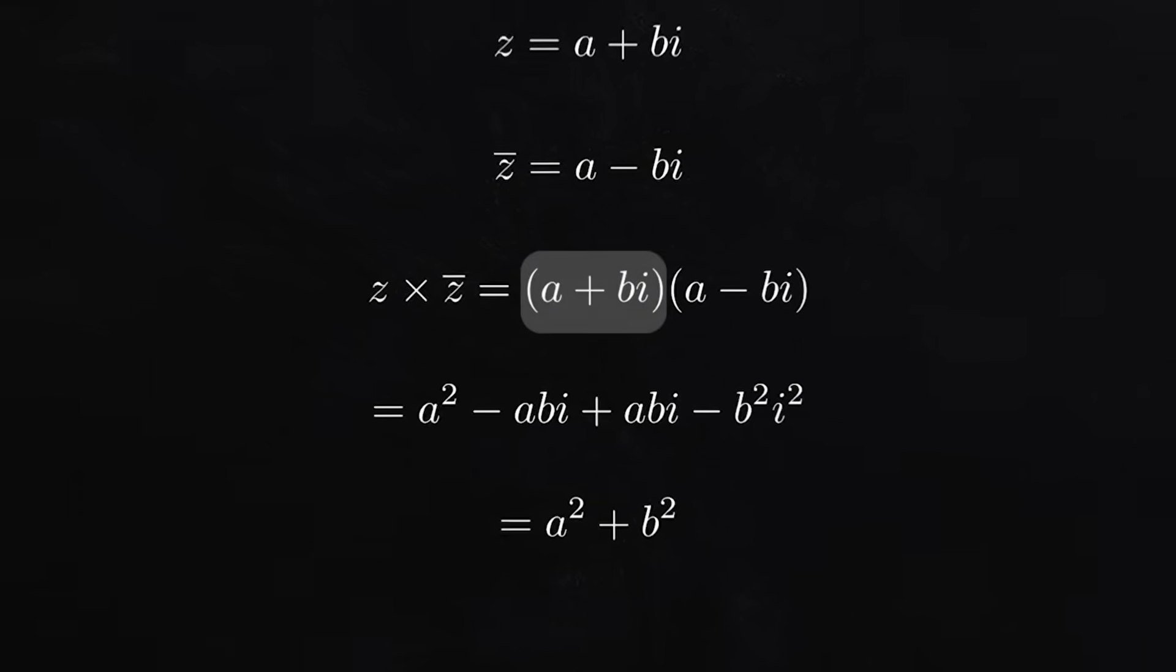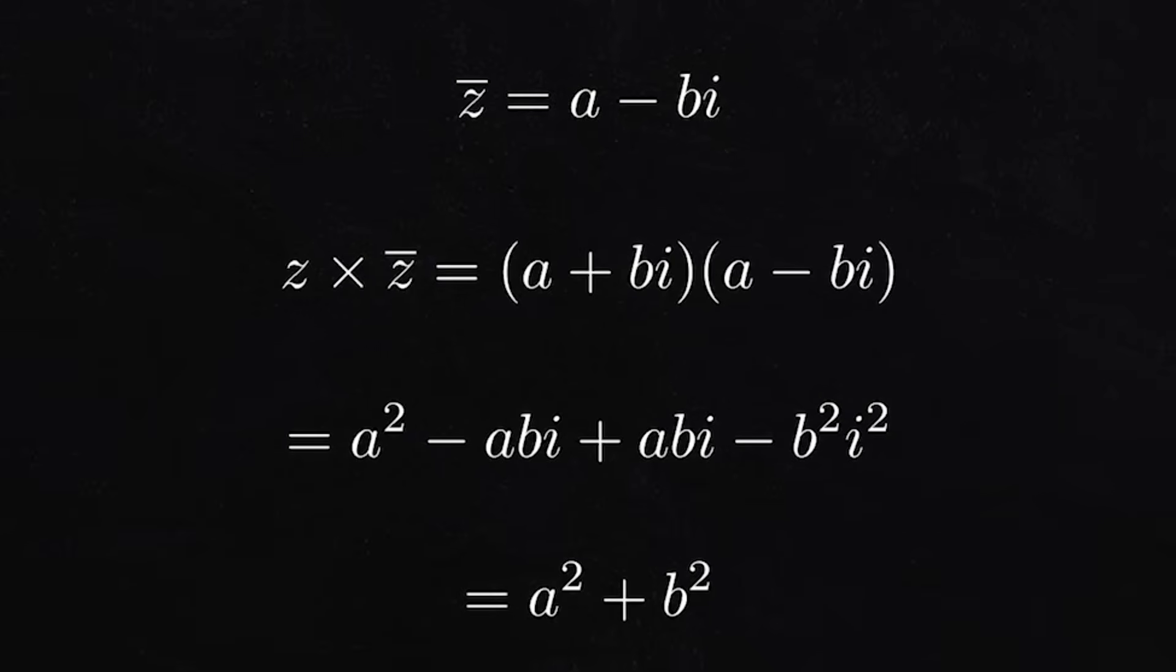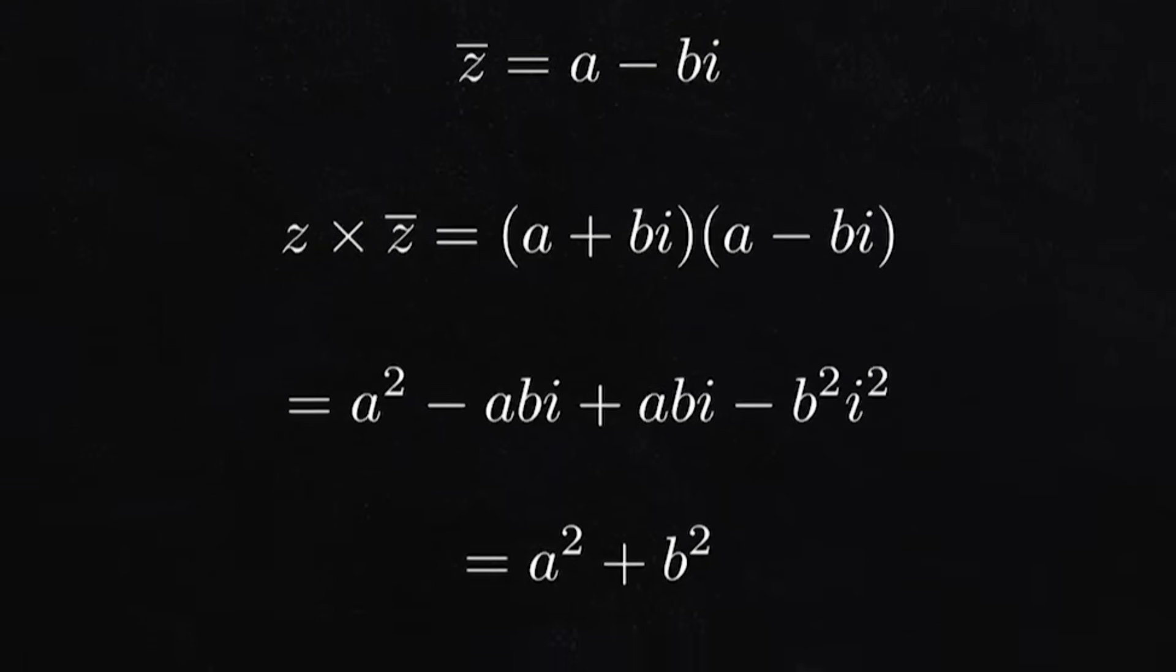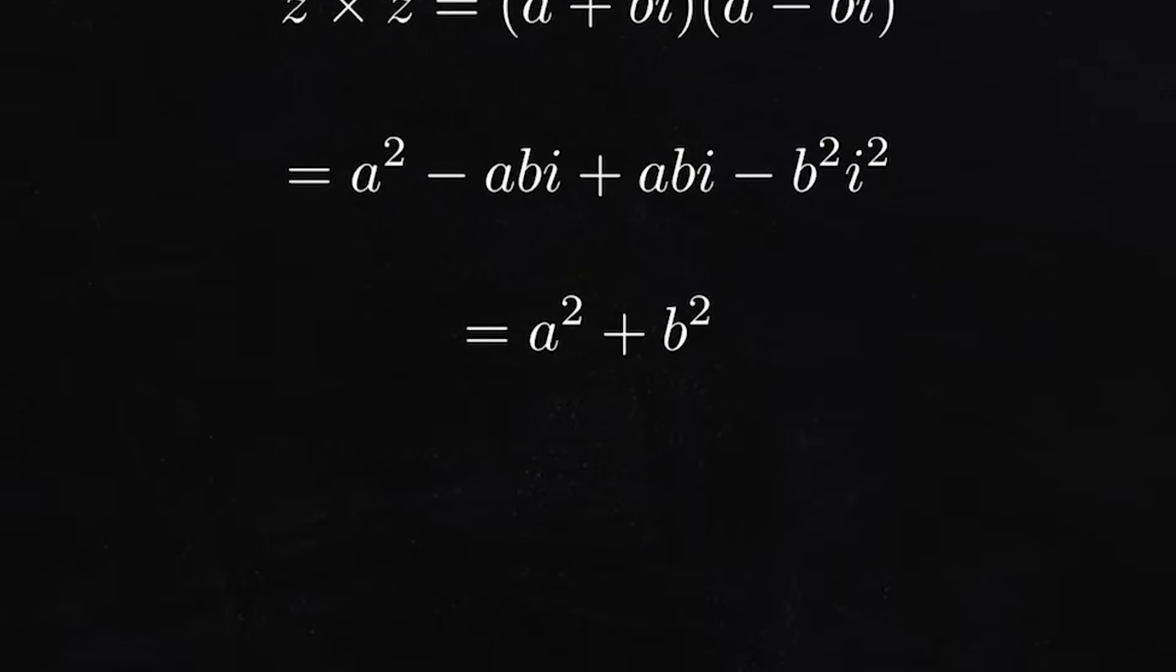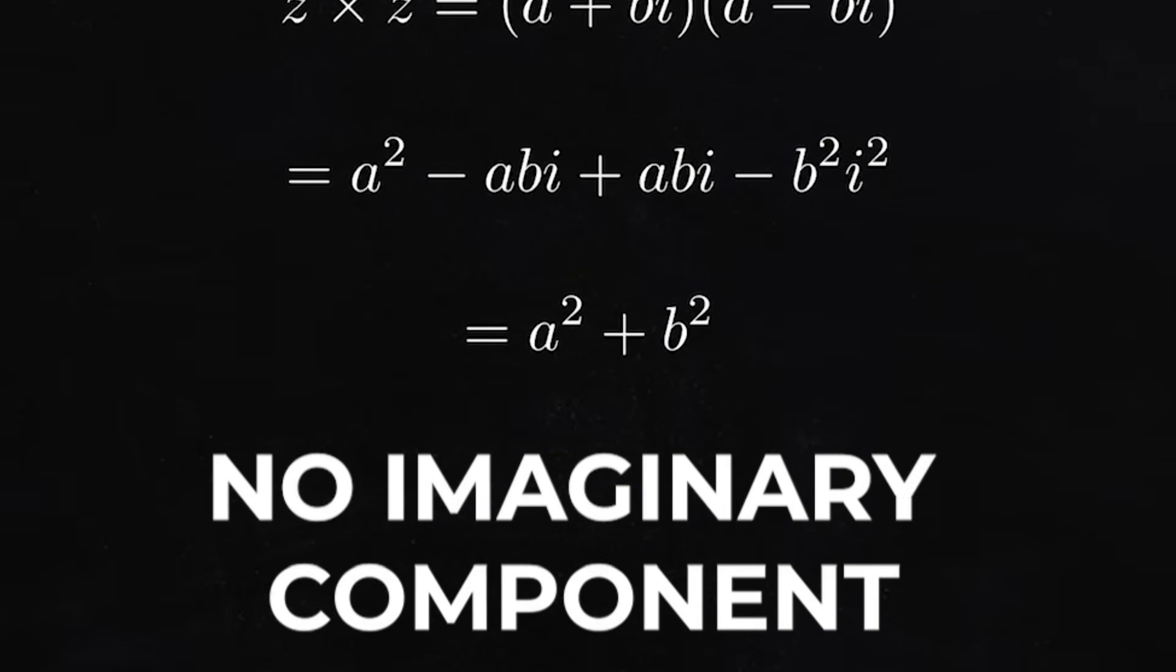For a complex number a plus bi, the complex conjugate is just a minus bi. What you'll notice though is that if we multiply these together, we get a squared plus b squared, which is just a real number. Since the cross terms cancel out, there is no imaginary component.